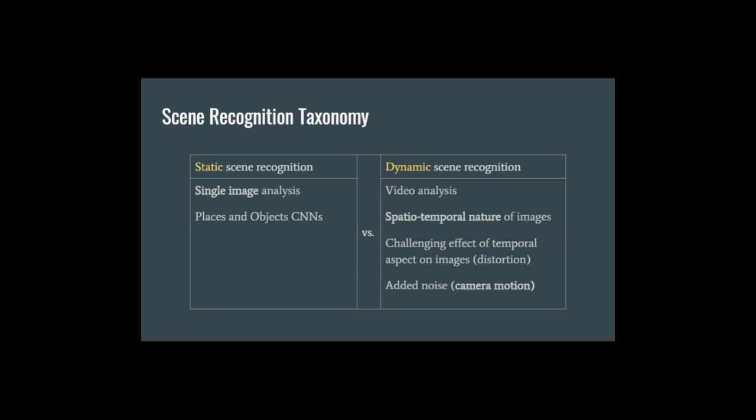In our review paper, we differentiate between two types of scene recognition. On the one hand, we identify static scenes depicted by single images, and on the other hand, we have dynamic scenes which are generally captured by videos. The approach to static scene recognition is generally combining place and object cues, whereas for dynamic scene recognition, an extra step is imposed in order to tackle the temporal aspect. This temporal aspect may introduce distortion, noise, or camera motion.